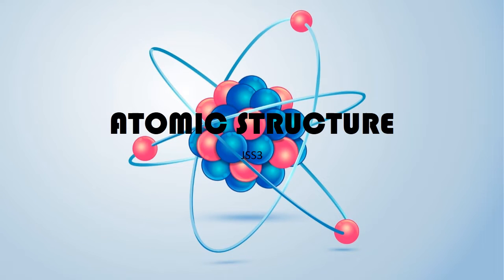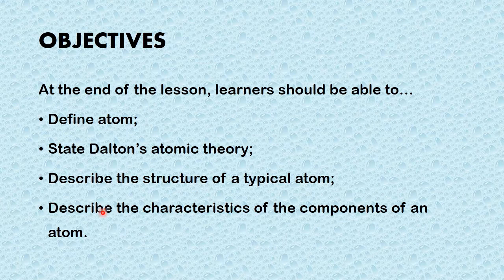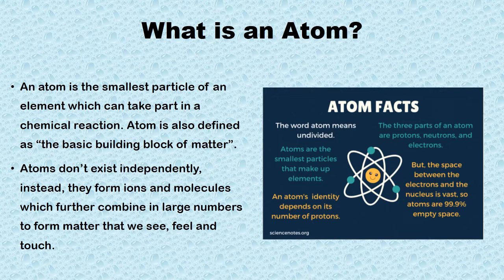Hello there. It is time for another basic science lesson and today we'll be looking at the topic atomic structure. The objective of today's lesson is to ensure that learners are able to define atom, state Dalton's atomic theory, describe the structure of a typical atom, and describe the characteristics of the components of an atom. Now, an atom is the smallest particle of an element which can take part in a chemical reaction. Atom is also defined as the basic building block of matter.